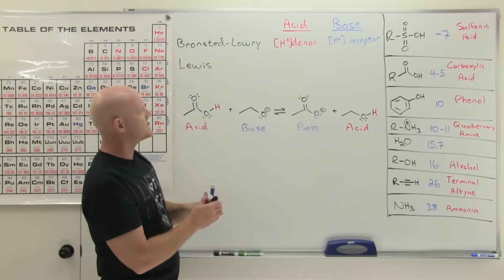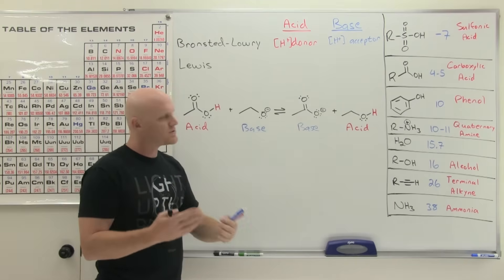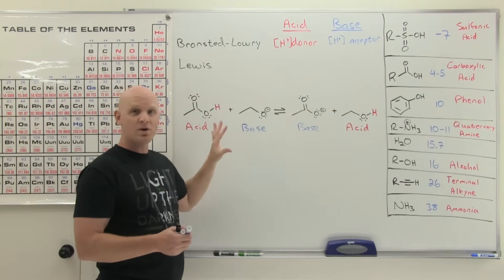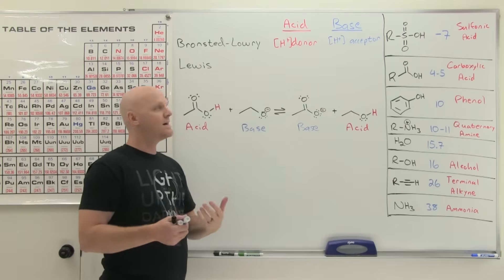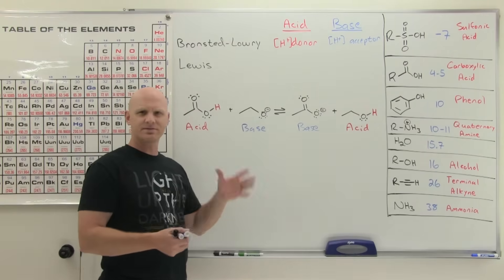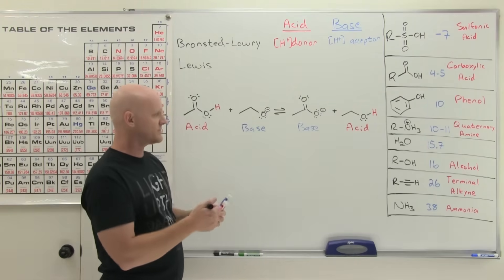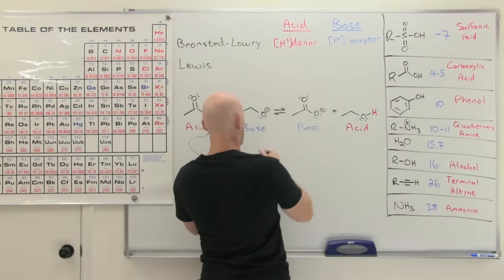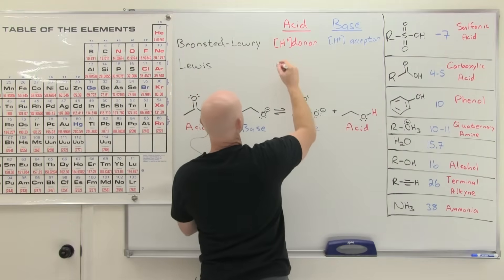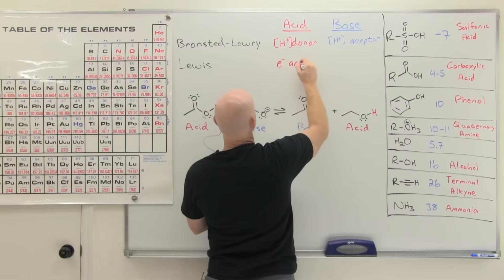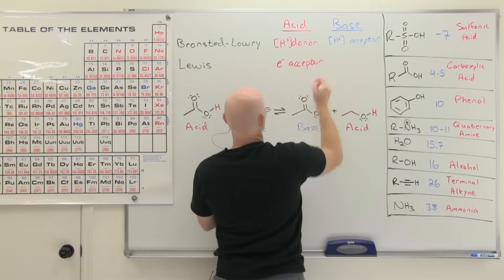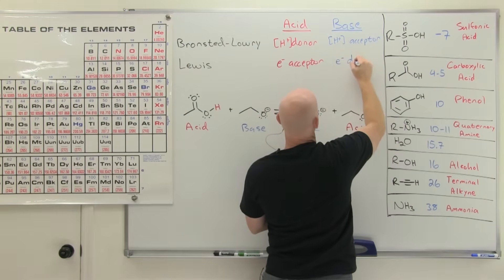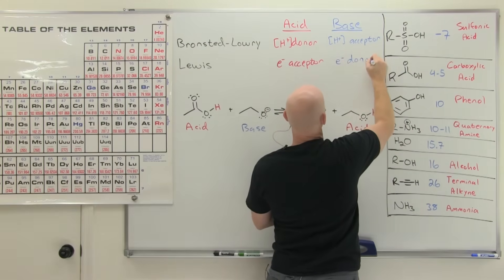Lewis's definition says: instead of following the H-plus, you should really be following the electrons. The electrons are a little more challenging to follow, which is why his definition is more challenging for traditional acid-base reactions. He said instead of acids being your H-plus donor, they're really your electron acceptors. And bases, instead of being the H-plus acceptors, are really the electron donors.